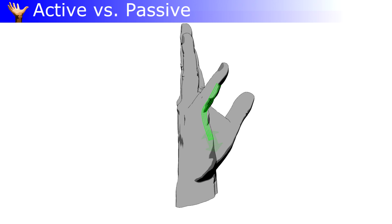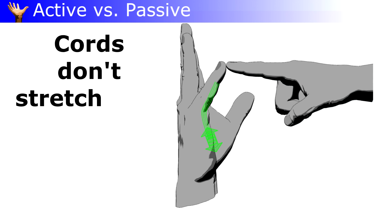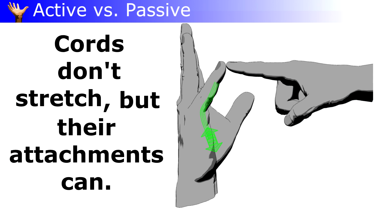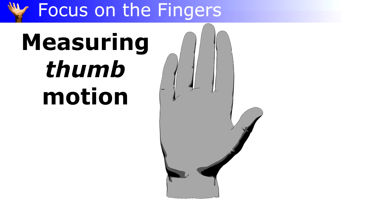Another reason is play in the system. If one end of the cord starts in the stretchy skin of the palm, pushing a finger will give a different measurement than straightening it on its own.